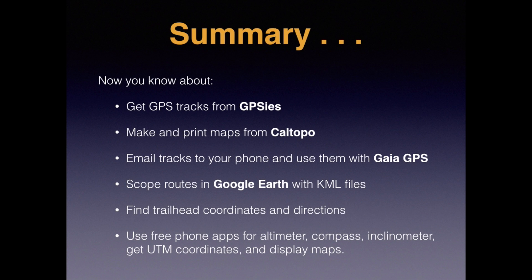Well, we covered a lot of ground. To summarize: you now know how to get GPS tracks from the web, the best source for free topographic maps, the best backcountry GPS app for your phone, how to see your route in Google Earth, how to get trailhead coordinates and directions, and free apps to make your phone an altimeter, barometer, compass, inclinometer, show your coordinates, and display maps. Thanks a lot for watching, and please give us a like and a happy comment on YouTube if you found this video helpful.